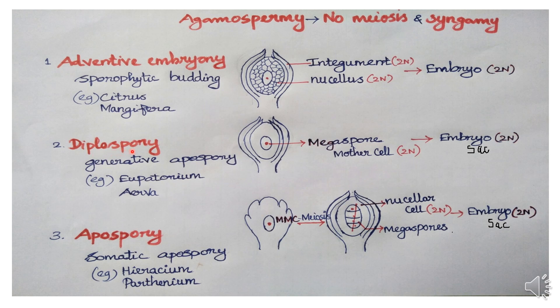Next one is diplospory. During ovule development in megasporogenesis, the megaspore mother cell is diploid. This megaspore mother cell does not undergo meiotic division; instead, it directly produces the embryo sac. So the embryo sac — with egg, synergids, and other cells — is in a diploid condition. There will be embryo development, and the embryo has a diploid condition.